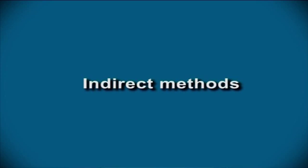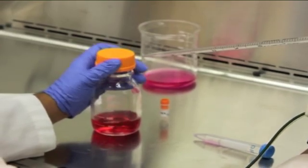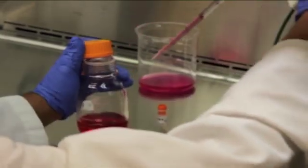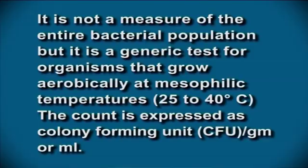After the direct methods, let us learn about indirect methods. Indirect count is made by growing microorganisms in liquid broth; as microorganisms grow, the broth becomes cloudy or turbid. The turbidity is measured using a turbid meter, colorimeter, or spectrophotometer. Aerobic plate count or APC is used as an indicator of bacterial population in a sample, also called aerobic colony count, standard plate count, mesophilic count, or total plate count. The test is based on the assumption that each cell forms a visible colony when mixed with agar containing appropriate nutrients. It measures organisms that grow aerobically at mesophilic temperatures between 25 to 40°C, and the count is expressed as colony forming units or CFU per gram or ml.